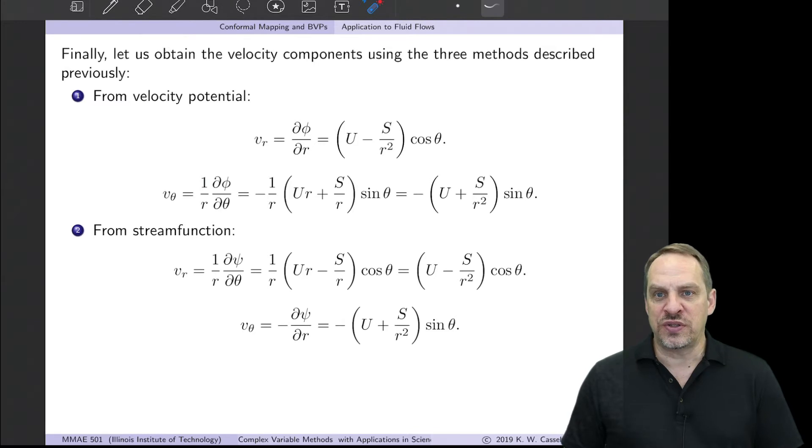Let's get the velocity components. As we've said before, there's three ways to get these. Let's do it using all three ways in this case. Here it is from the velocity potential, φ. So vr is ∂φ/∂r. That's the definition of the velocity potential. If you differentiate the φ that we just got with respect to r, you get this expression here. That's vr.